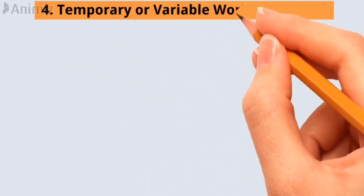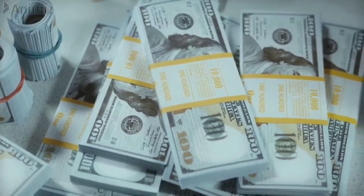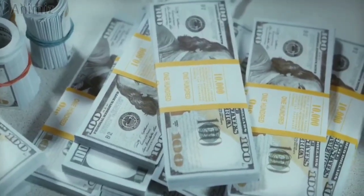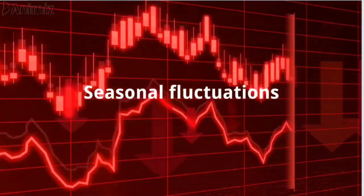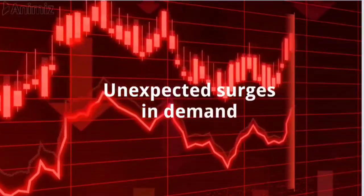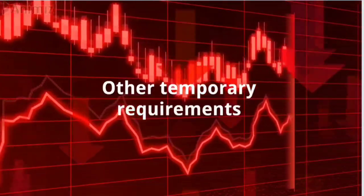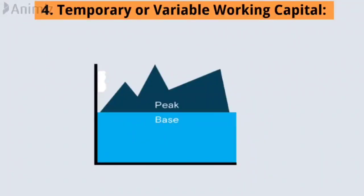Number four, temporary or variable working capital. Temporary working capital refers to the additional working capital needed to meet seasonal fluctuations, unexpected surges in demand, or other temporary requirements. It represents the difference between the peak and base levels of working capital during different business cycles.